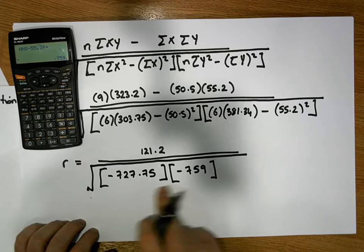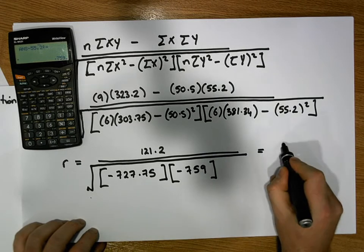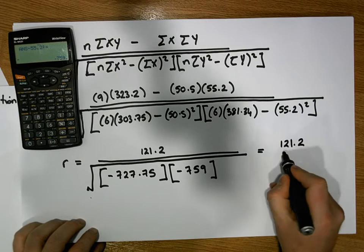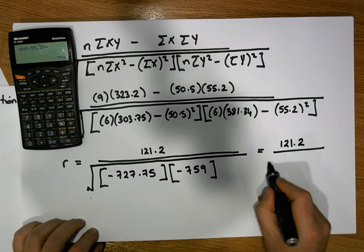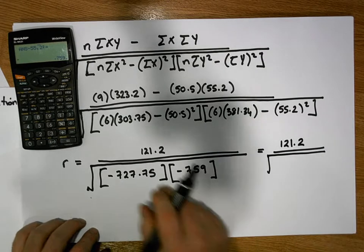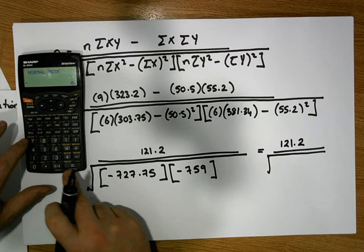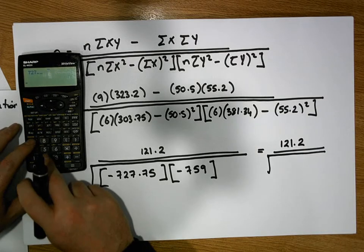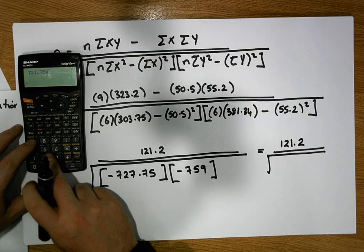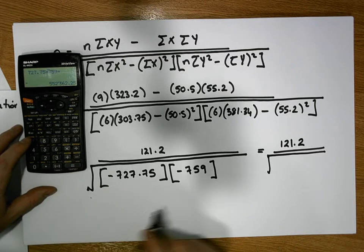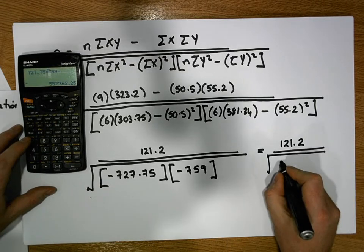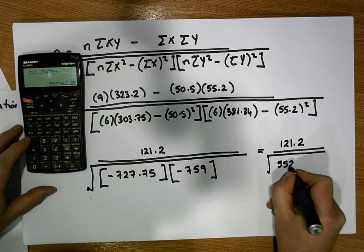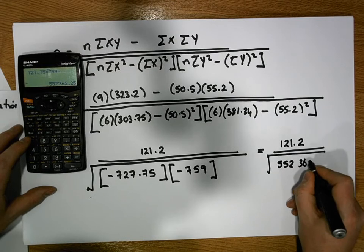So let's calculate this product here. So this becomes 121.2 divided by the square root of, well, we have minus times minus is plus, we have 727.75 multiplied by 759 gives us 552,362.25.